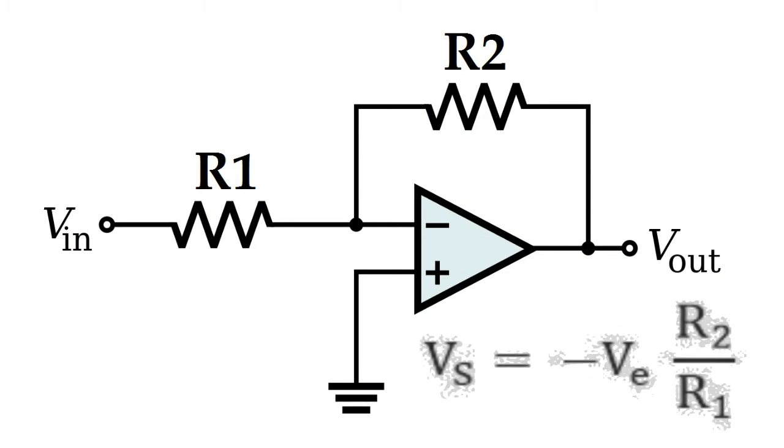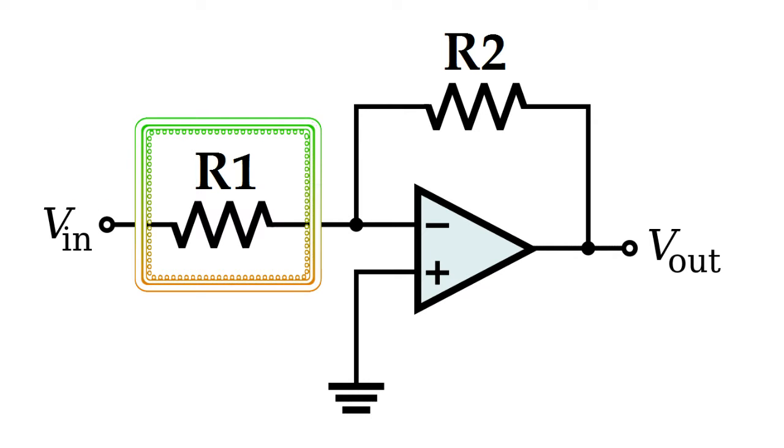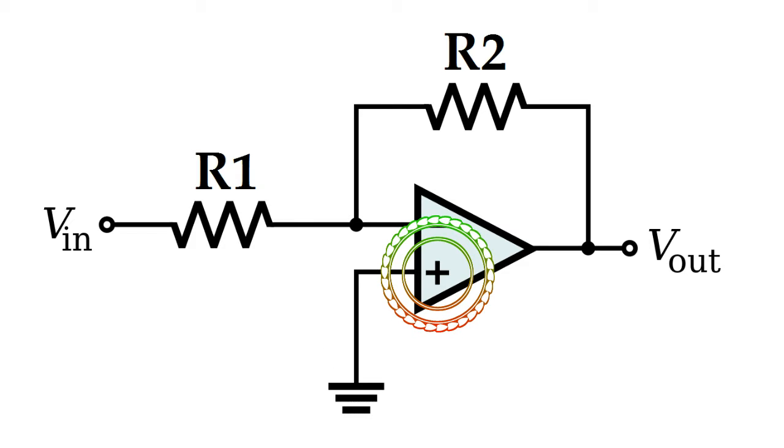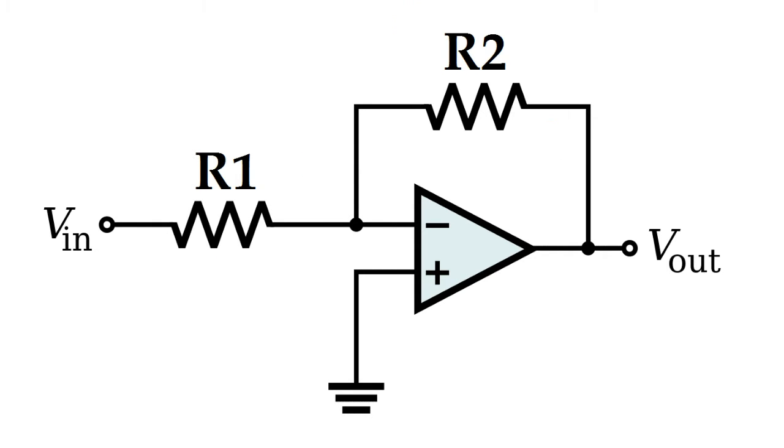In this configuration, the output is fed back to the negative input through a resistor R2. The input signal is applied to this inverting pin through a resistor R1. Note that the positive pin is connected to ground. This is evident in the special case where R1 and R2 are equal. This configuration allows for the production of a signal that is complementary to the input, as the output is exactly the opposite of the input signal.